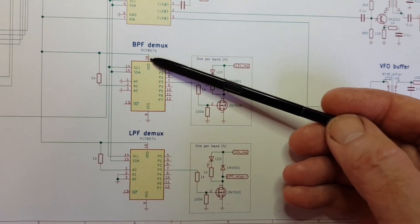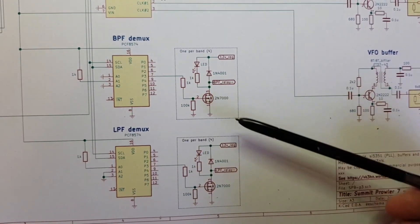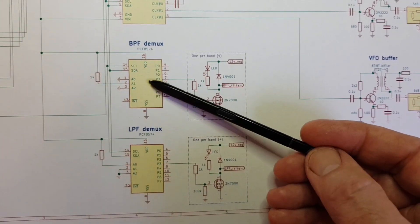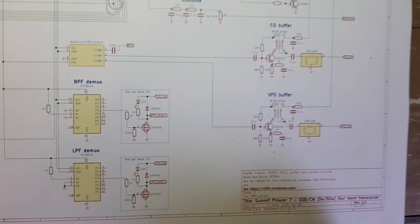I use PCF 8574D multiplexers to switch the band relays. I have one for the bandpass filters and one for the low pass filters, and that just gives me independent control of the two.